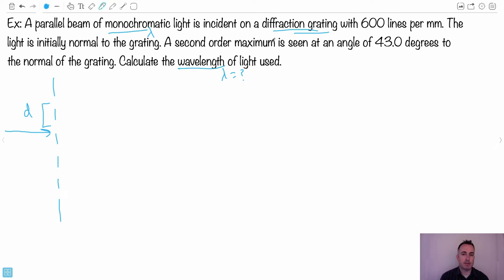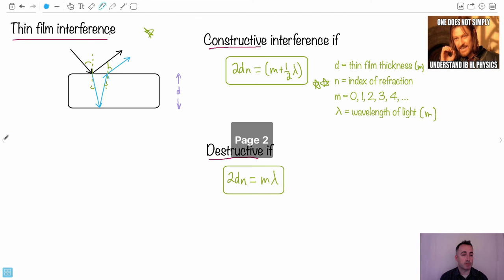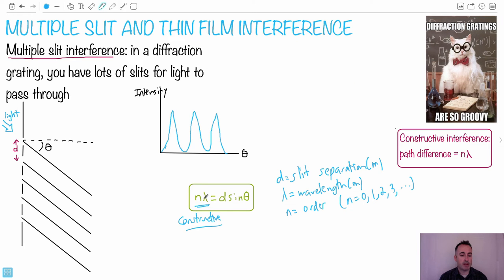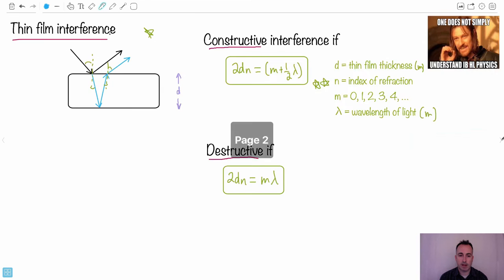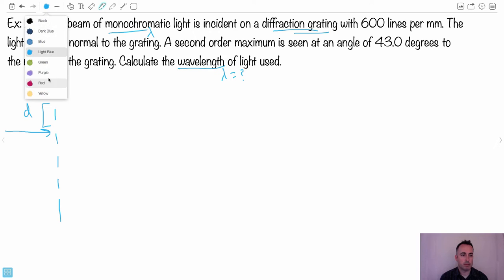And second order maximum is seen at an angle of this much to the normal. So what this means then is we have a second order maximum, which in this case right here, let's see that. Well, let's look at the equation first. Maybe that'll help us. This equation here, n lambda equals D sine theta. We're going to need that. Okay, so n lambda equals D sine theta. Try to remember that. Here we go. We'll use n lambda equals D sine theta.